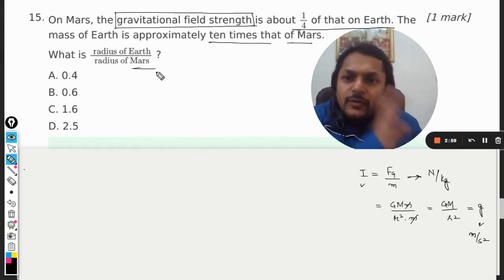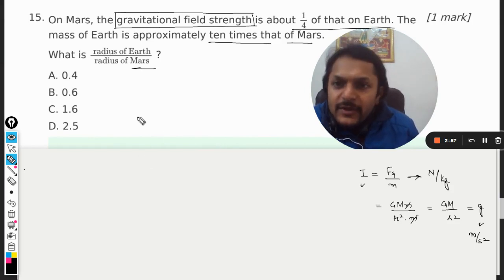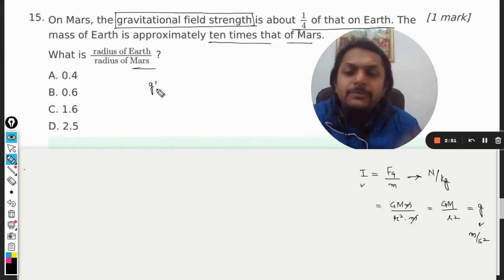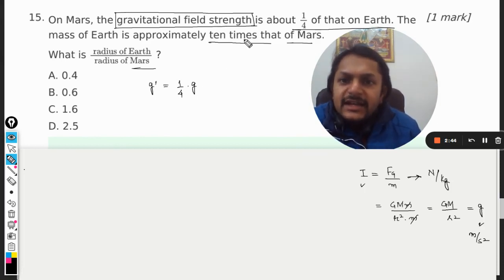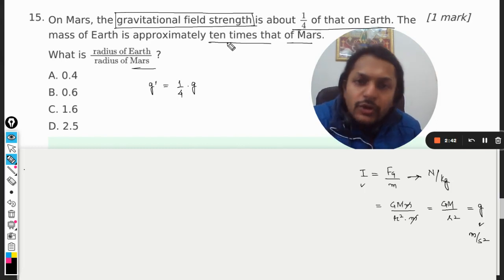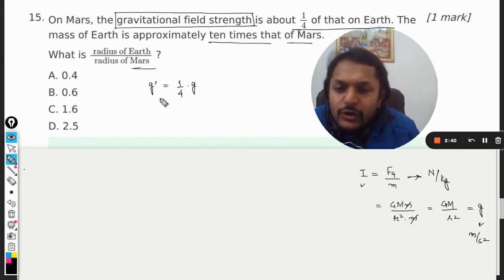Coming back to the question, gravitational field strength means we're talking about G. Gravity on Mars, G dash, equals one fourth of that on Earth. Mass is given, we want the ratio of the radius, so what are we going to do? We just substitute the values.